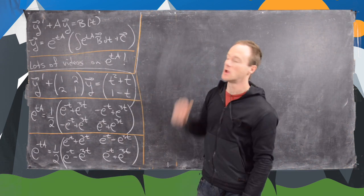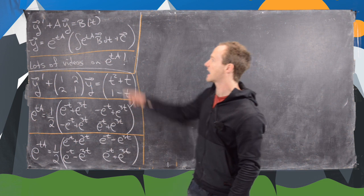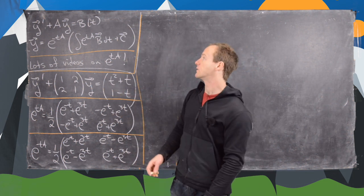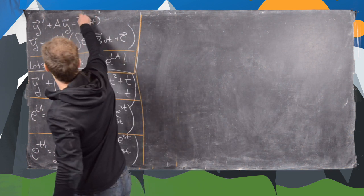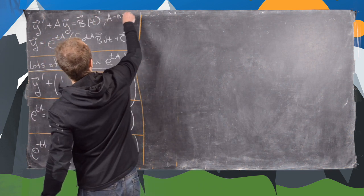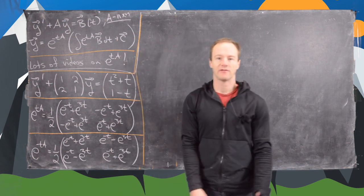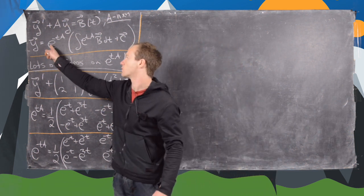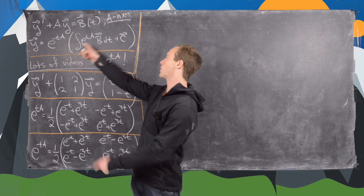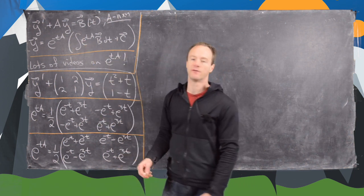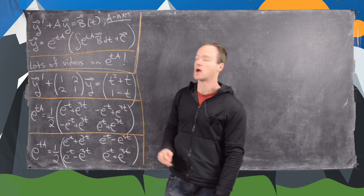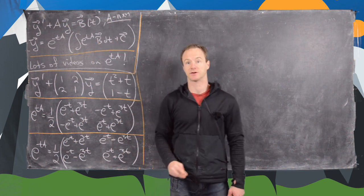Let's recall the fact we established: if we have y prime plus Ay equals b of t, where all of those are vectors and A is an n by n matrix, then we have a solution: vector y equals e to the minus tA times the antiderivative of e to the tA times vector b of t, plus a constant vector.